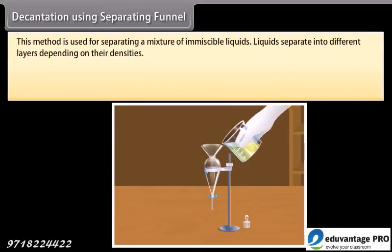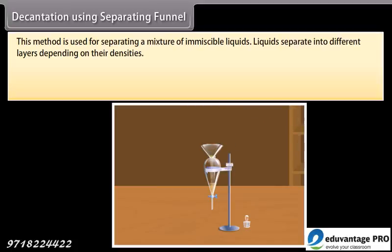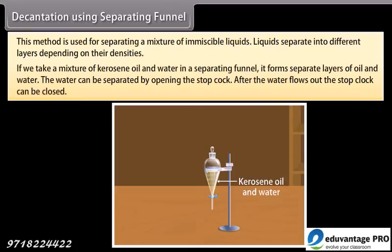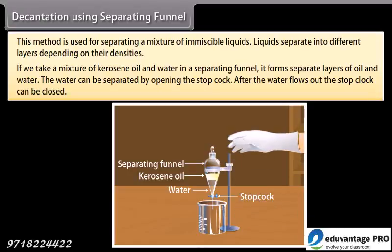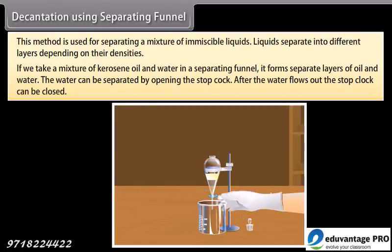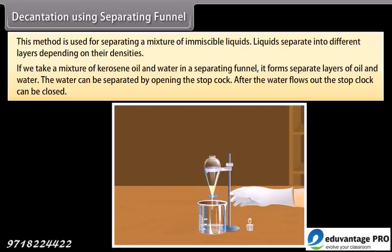Decantation using a separating funnel: This method is used for separating a mixture of immiscible liquids. Liquids separate into different layers depending on their densities. If we take a mixture of kerosene oil and water in a separating funnel, it forms separate layers of oil and water. The water can be separated by opening the stopcock, and after the water flows out, the stopcock is closed.